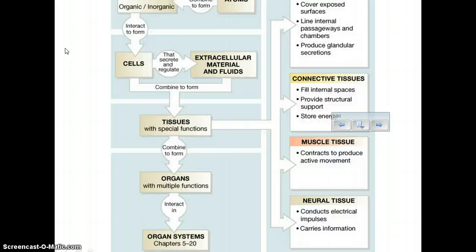If you look at epithelial, those are tissues that cover surfaces, they line passageways and chambers, and they produce glandular secretions. Connective tissues fill spaces and provide some support, and they're very important for storing energy. Our muscle tissues produce contractions that help us with movement, and neural tissues are specialized for conducting electrical impulses and carrying information. Take a moment and try to fill in your diagram in your notes from this, but remember this is a picture from your book and you can still find this on your own.